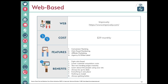The third solution is web-based. I found one called Improvedly. It only costs $29 per month. The features include conversion tracking, agency white label, and affiliate marketing. The benefit is that we will fight click fraud through their software, they have a lower customer acquisition cost, and we don't need to install any software — everything is web-based.